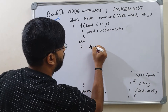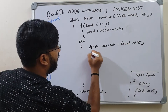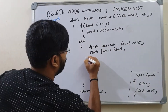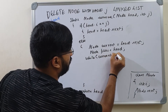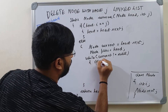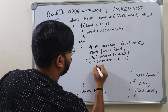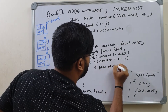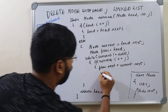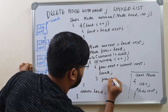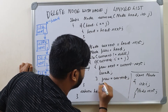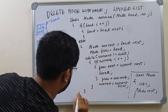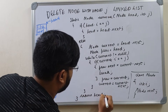In the else part, I declare node current pointing to head dot next, and node previous pointing to head. Previous will always point to the node right behind current. While current is not equal to null, if current dot i equals j, we say previous dot next equals current dot next and break the loop. Otherwise, previous tracks current and current moves to current dot next. After the while loop ends, we return head.